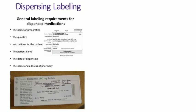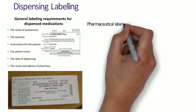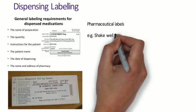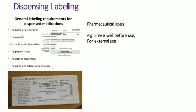Thinking about precautions relating to the use of a product, there are two types of warning labels: pharmaceutical warnings and BNF warnings. Pharmaceutical warnings encompass things such as 'for external use only,' 'shake the bottle,' and 'store in a cool dry place,' as they relate to stability and the optimum conditions for the formulation.